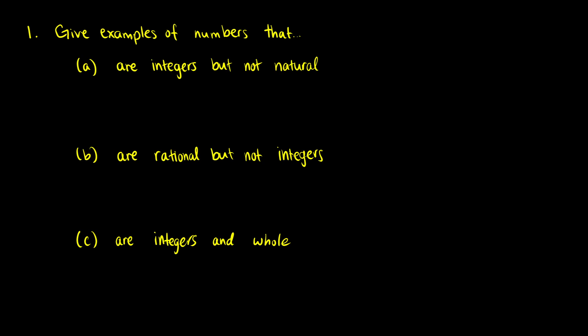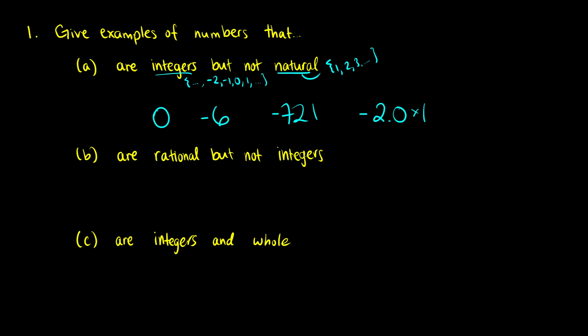The first question tests your understanding of different sets of numbers — give examples of numbers that follow certain properties. For integers that are not natural numbers: remember natural numbers start at 1, 2, 3 and go on forever, while integers include negative infinity up through negative 2, negative 1, 0, 1, and so on. Examples include 0, negative 6, negative 721, or negative 2.0 × 10^65 — a gigantically negative number.